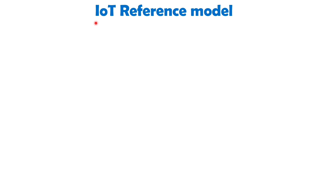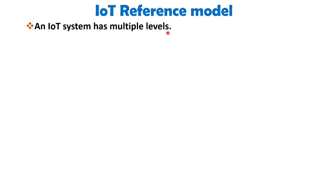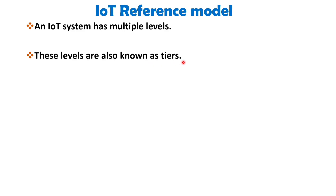Now in an IoT system, there are different levels that represent distinct functionalities and components. These levels can include physical devices such as sensors and actuators, connectivity infrastructure, data processing and analytics, applications and many more. Each level contributes to the overall functioning of the IoT system. These levels are also known as tiers. This terminology emphasizes the hierarchical structure and the specific roles and responsibilities associated with each level. Tiers help in organizing and understanding the different components that are involved in an IoT solution.